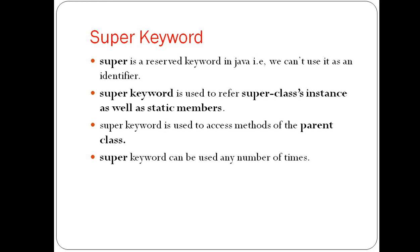Super is a reserved keyword in Java, meaning we can't use it as an identifier. An identifier is the name of a variable, class, method, package, interface, etc. Reserved keywords are predefined and have a unique meaning and functionality, so they cannot be used as a variable name, class name, method name, or interface name.